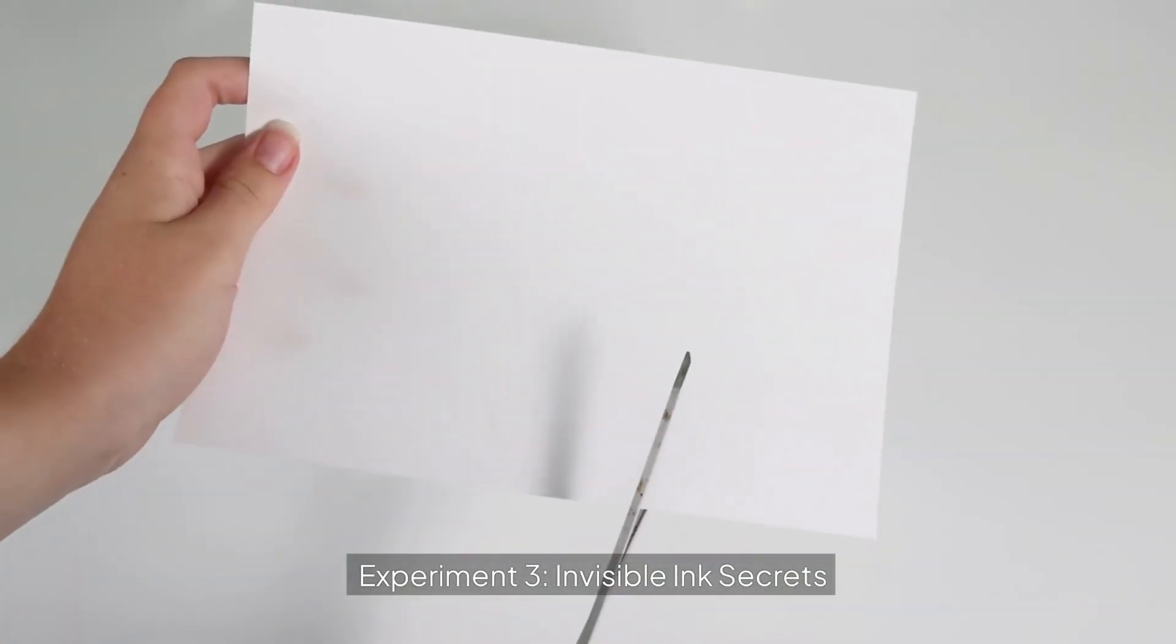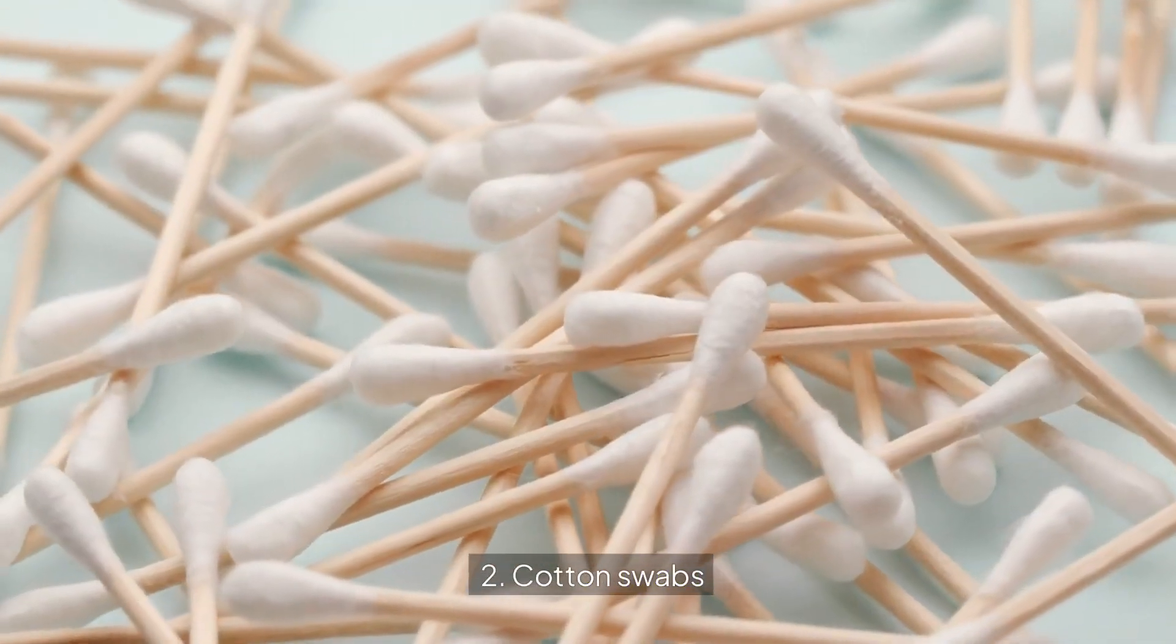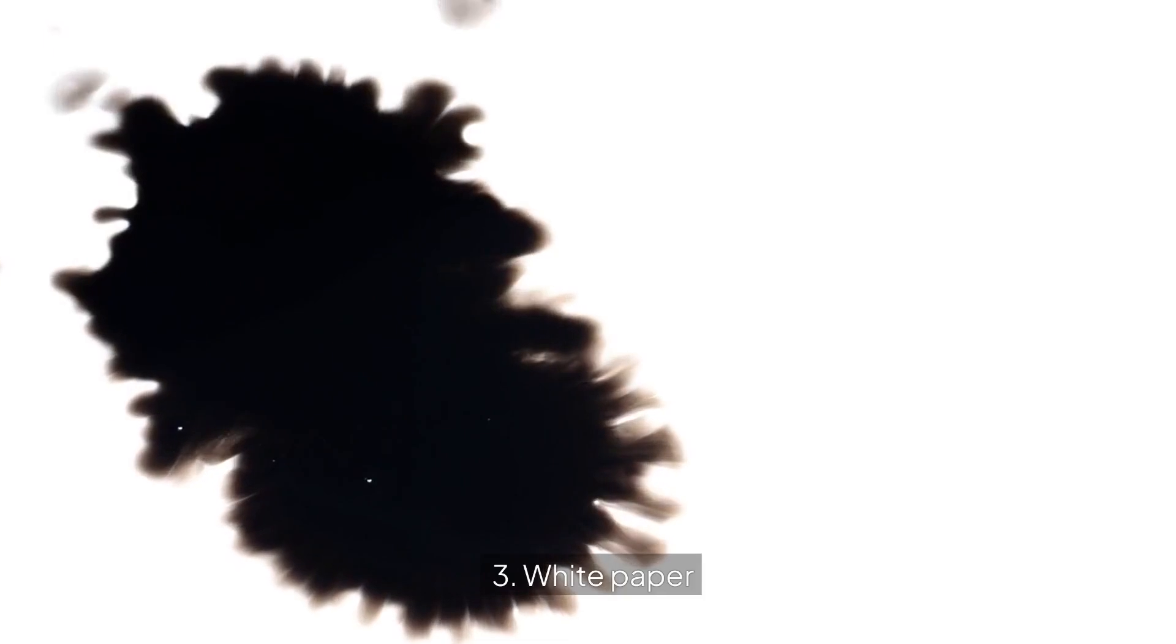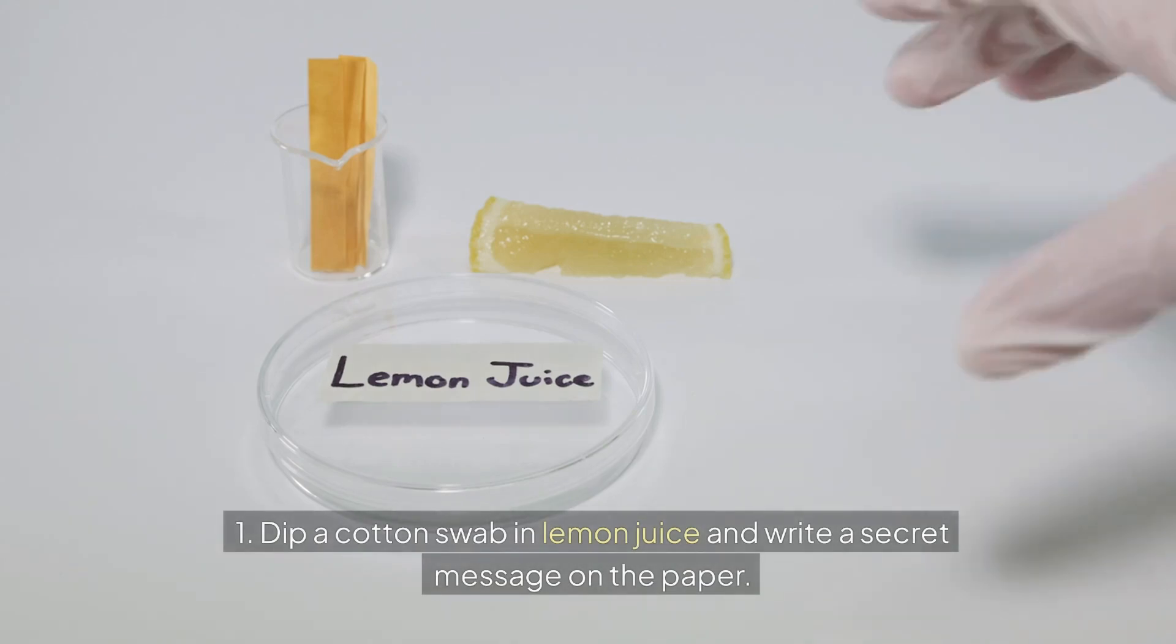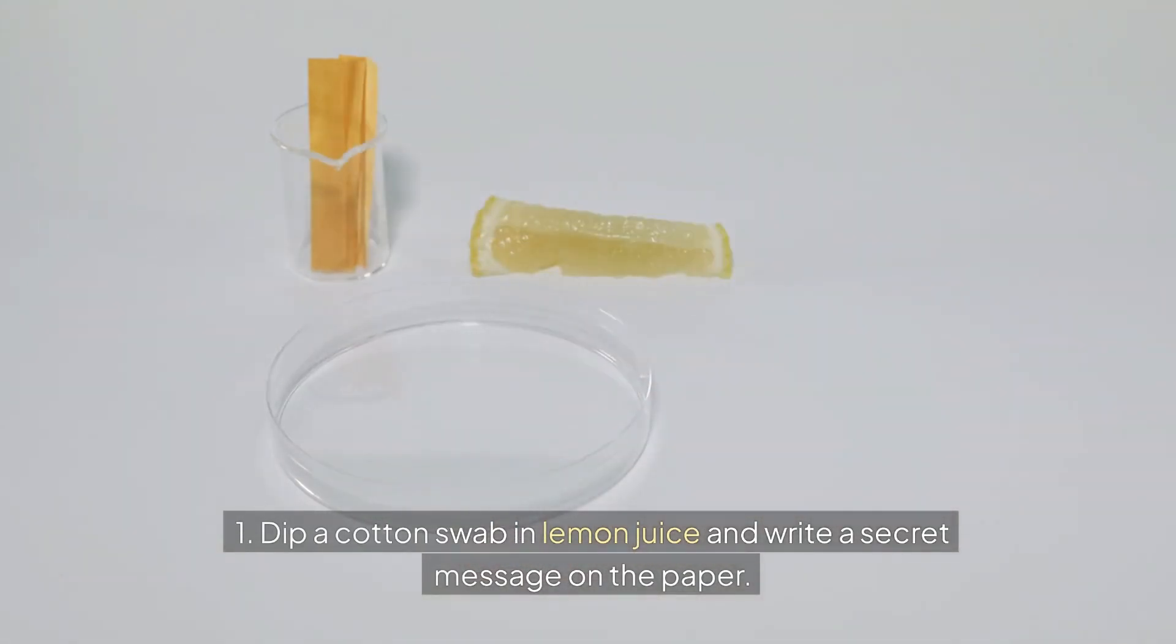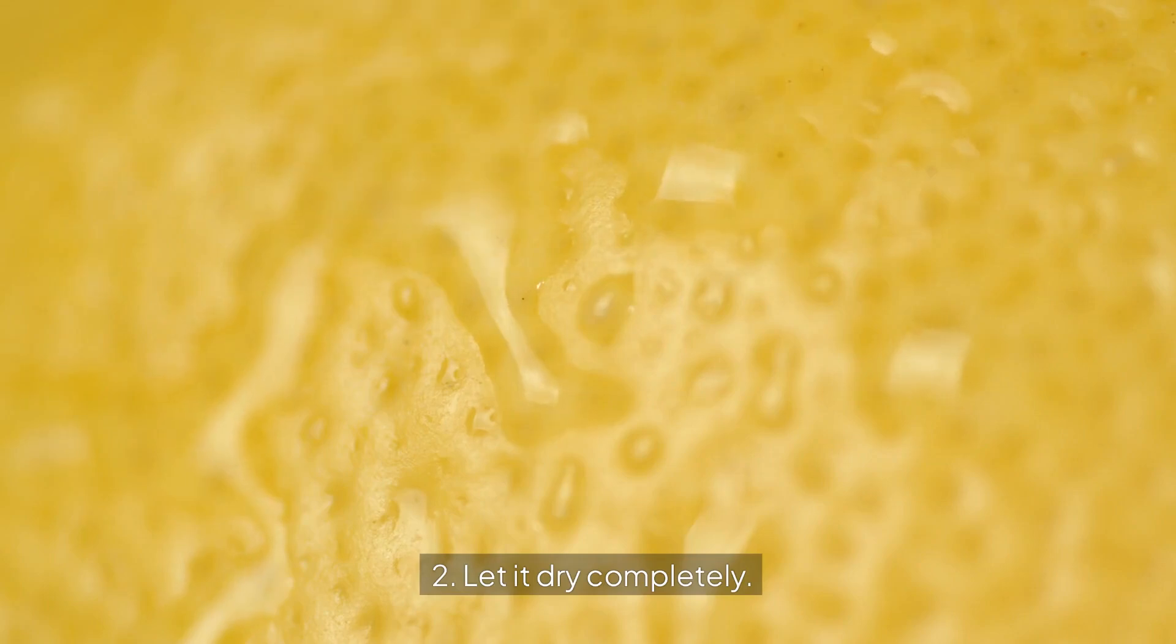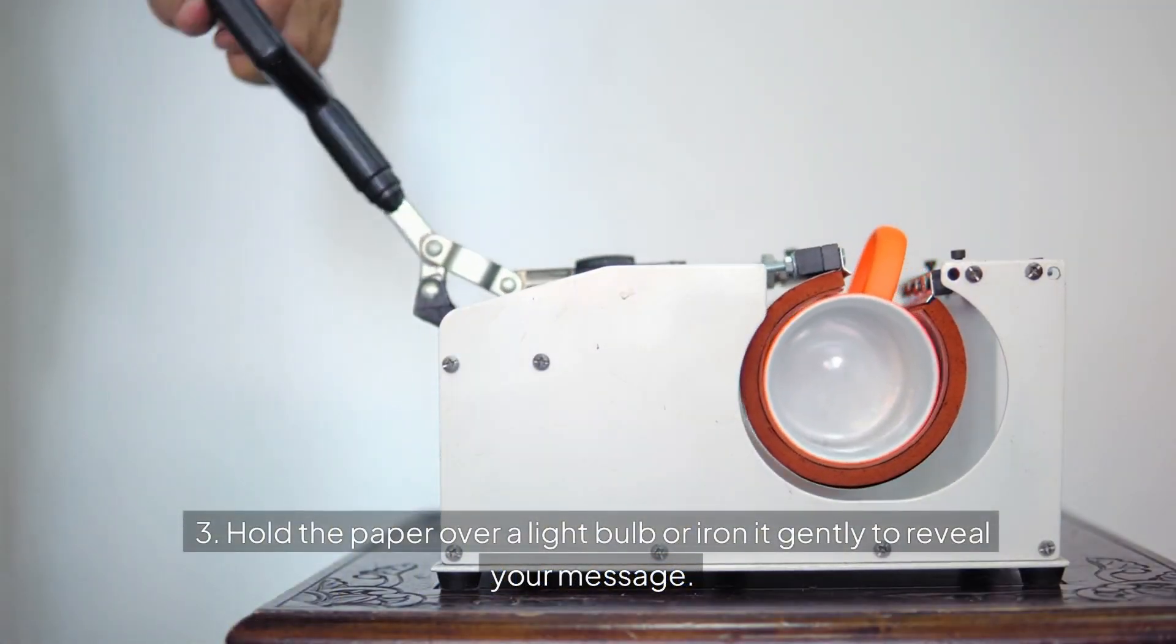Experiment 3: Invisible ink secret. Supplies: lemon juice, cotton swabs, white paper, and an iron or light bulb. Steps: Dip a cotton swab in lemon juice and write a secret message on the paper. Let it dry completely. Hold the paper over a light bulb or iron it gently to reveal your message.